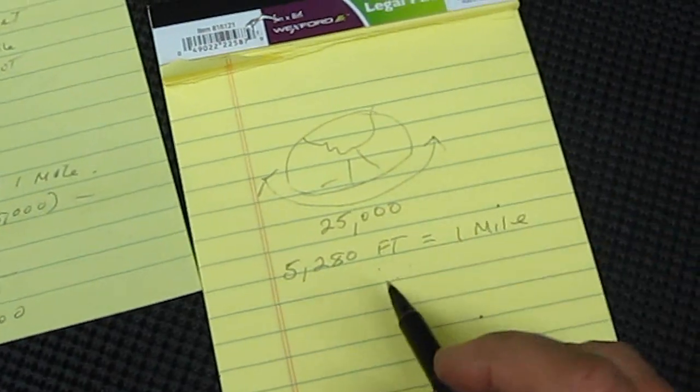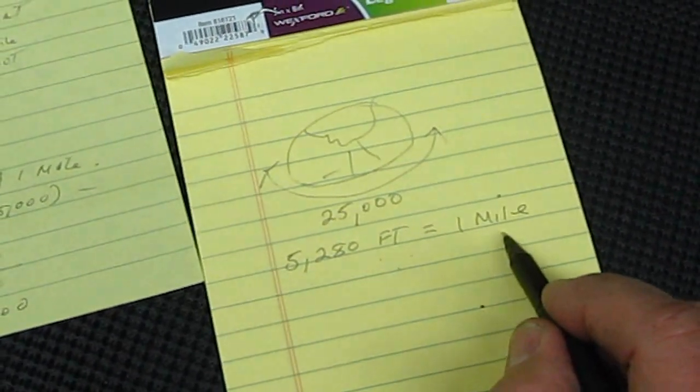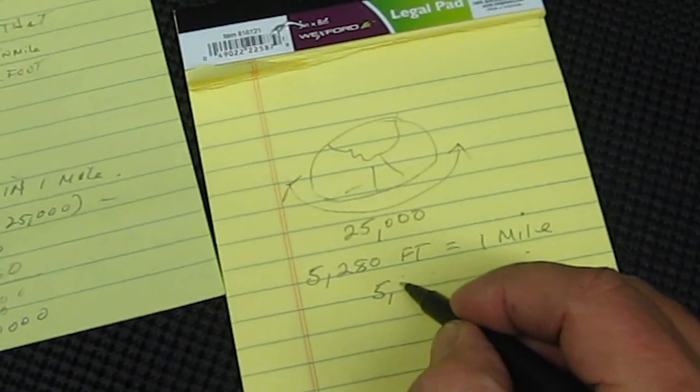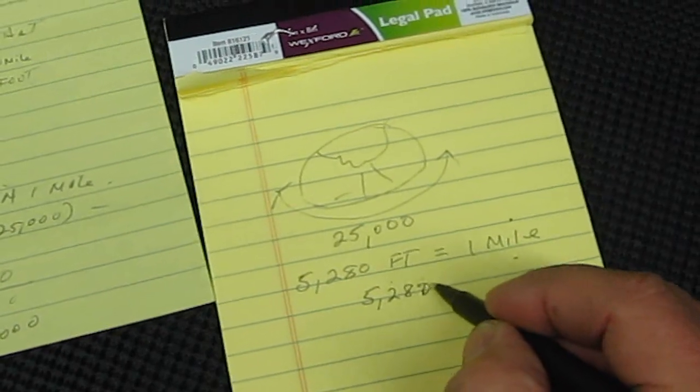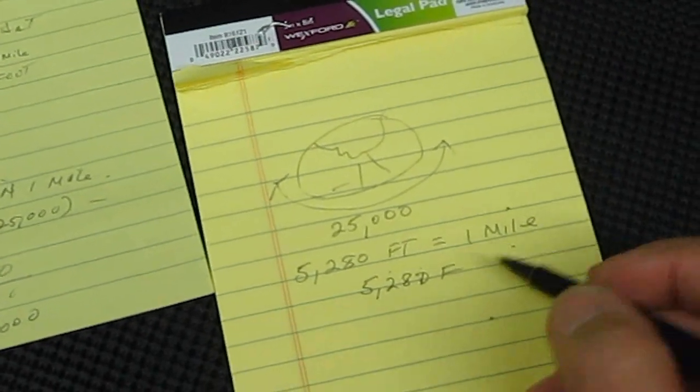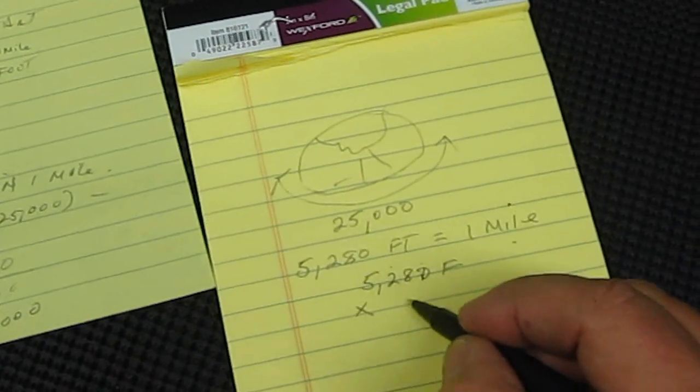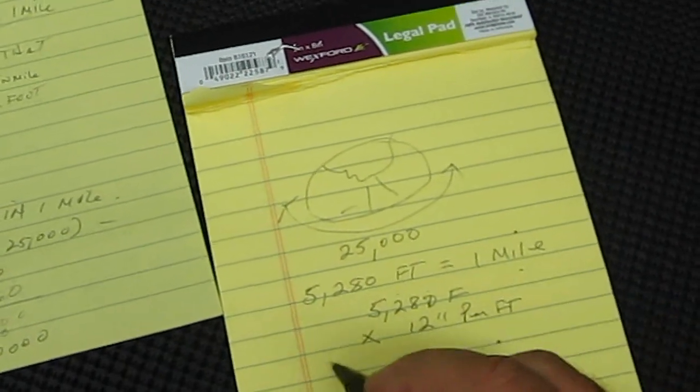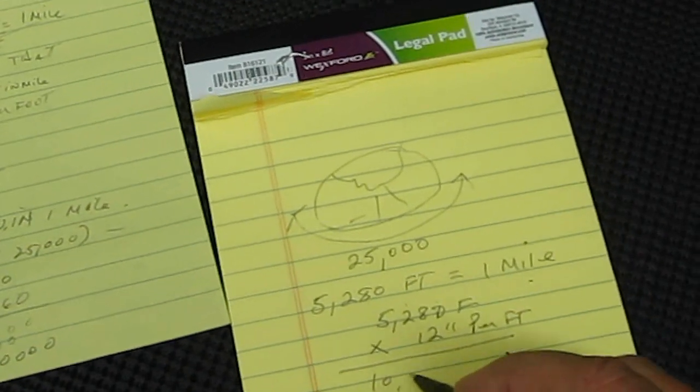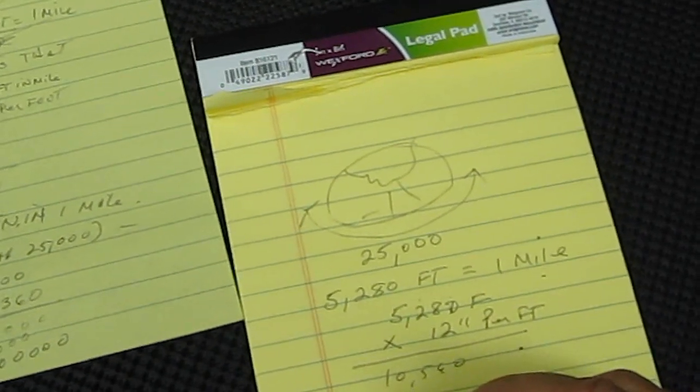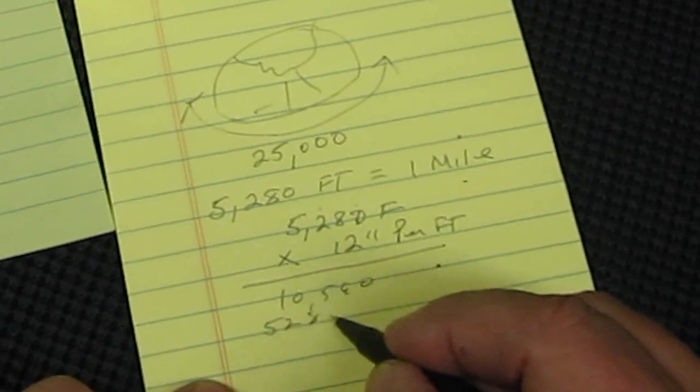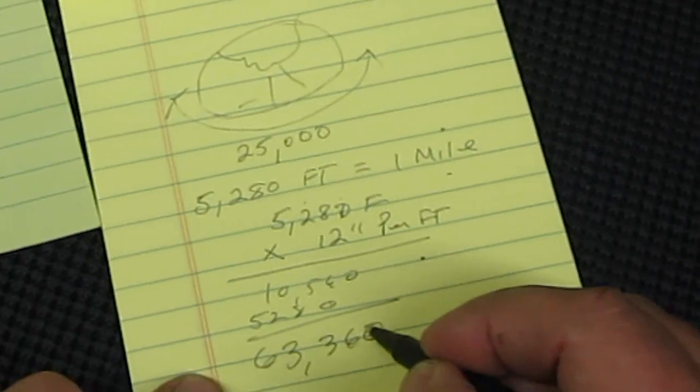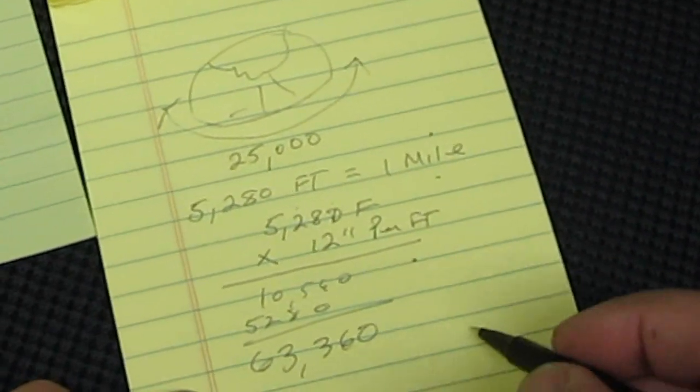Okay, so we need to figure out how many inches is in one mile. So to do that, we take 5,280 feet times 12 inches, that's per foot. And let's see, that's 60, two, eight, zero, sixty-three, three-sixty. Okay, that's how many inches are in a mile.